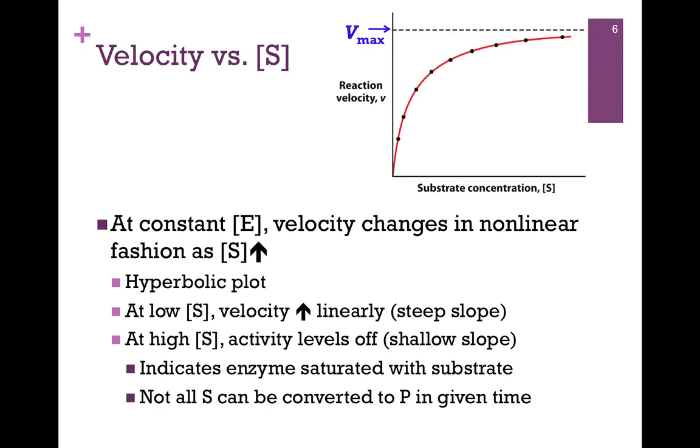Now we want to ask the question, how does that velocity change as a function of substrate concentration? Of course, in this case, we're going to hold our enzyme concentration constant, so that we're only varying one thing. And we have that graph illustrated at the top of the screen here. So our substrate concentration is increasing from left to right, and we see as we follow the reaction velocity that we get a hyperbolic plot. Hopefully this looks pretty familiar. So what this means is that at low substrate concentration, we get a pretty steep slope, a rapid increase in velocity, but then it starts to level off and would reach some maximum value.